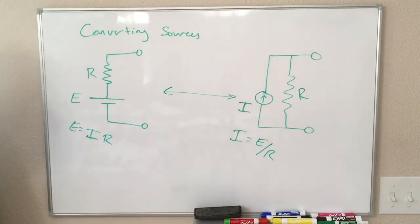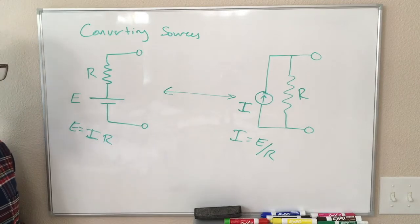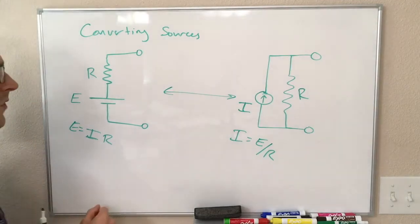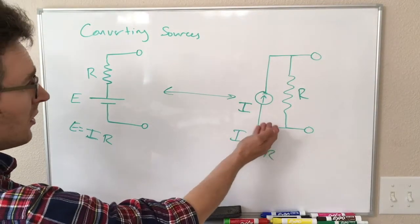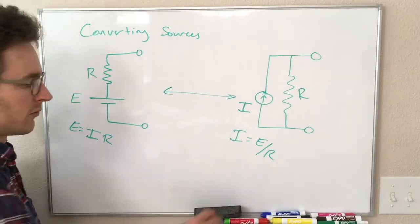So this can be useful because the techniques we're about to learn, or the next technique we're about to learn, requires us to have voltage sources only and not current sources. So if we had a current source that looks like this, we could convert it to this, and then use this next technique for solving.